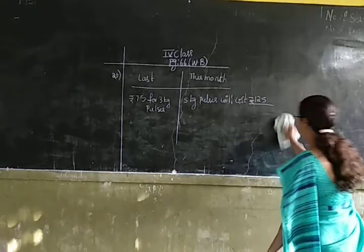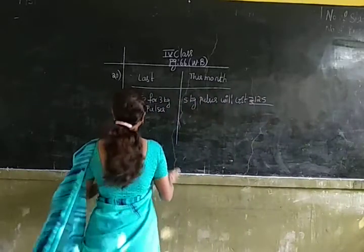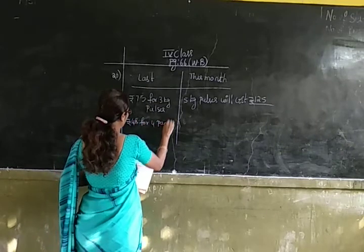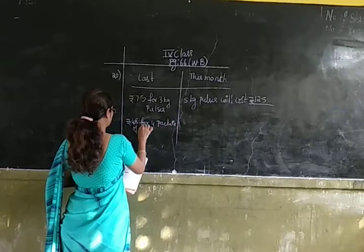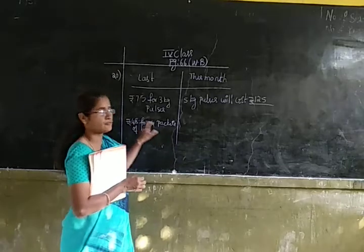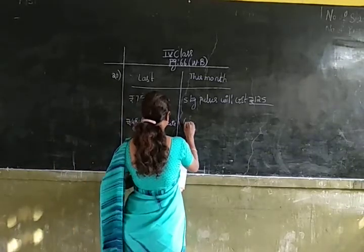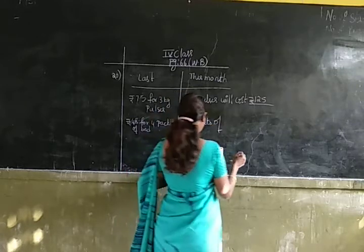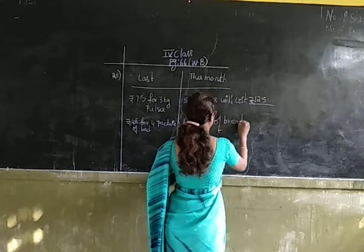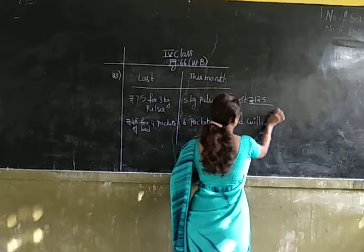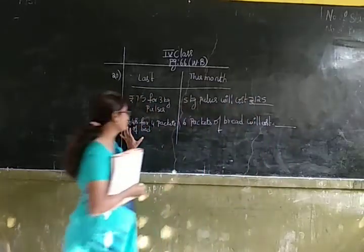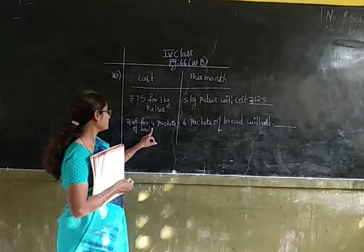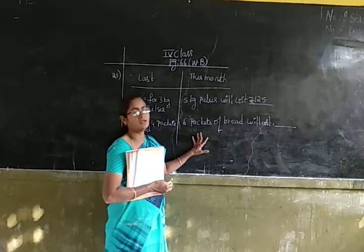Now let us do the next one, which is Rs. 48 for 4 packets of bread. We have to find out how much she has to pay for 6 packets of bread. Last month she purchased 4 packets of bread for Rs. 48. But this month she purchased 6 packets of bread. We have to find out the cost of 6 packets.